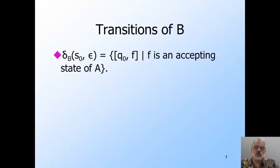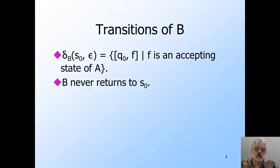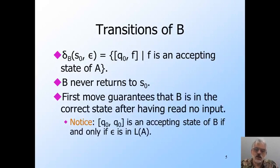Now let's design the transitions of B. From its initial state S0, B goes on epsilon to all pairs of A's states where the first state is the start state of A, and the second is one of the accepting states of A. As we shall see, B never returns to S0. And this first move guarantees that the empty string is handled correctly. B accepts the empty string if and only if Q0, the start state of A, is accepting. But that means A accepts epsilon and half of epsilon is epsilon. Thus B accepts epsilon if and only if epsilon is in half of L.